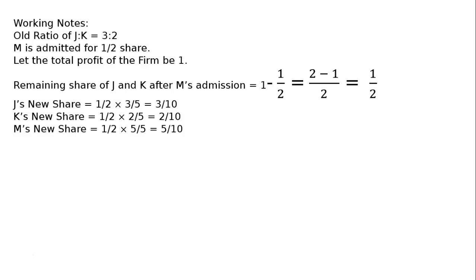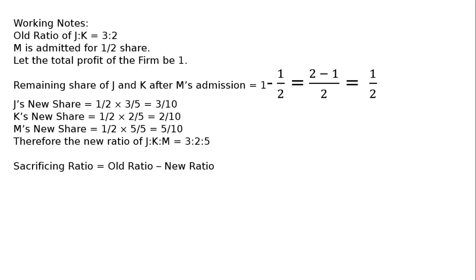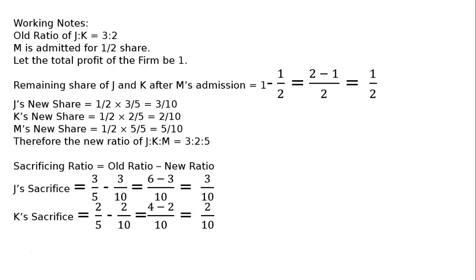M's new share is 1/2 multiplied by 5/5 to equalize the denominator to 10, giving 5/10. Therefore, new ratio of J to K to M is 3 to 2 to 5. Sacrificing ratio equals old ratio minus new ratio. J's sacrifice is 3/5 minus 3/10, which with LCM 10 gives 6 minus 3 = 3/10. K's sacrifice is 2/5 minus 2/10, which gives 4 minus 2 = 2/10. Therefore, sacrificing ratio of J to K is 3 to 2.